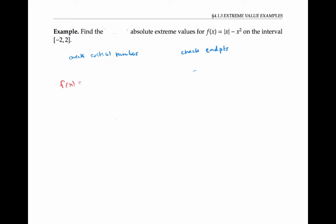Recall that when x is greater than or equal to zero, the absolute value of x is just x, so f of x will be x minus x squared. On the other hand, when x is less than zero, the absolute value of x is negative x, so f of x will be negative x minus x squared.